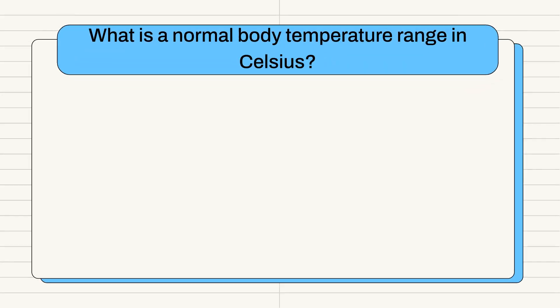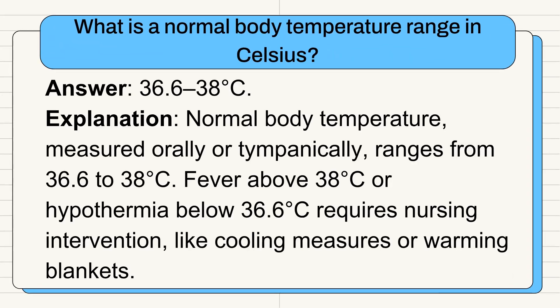Question 5: What is a normal body temperature range in Celsius? Answer: 36.6 to 38 degrees Celsius. Normal body temperature measured orally or tympanically ranges from 36.6 to 38 degrees Celsius. Fever above 38 degrees Celsius or hypothermia below 36.6 degrees Celsius requires nursing intervention, like cooling measures or warming blankets.